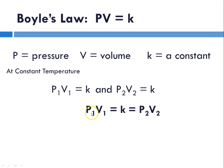We can rewrite that as P1V1 equals P2V2, where the ones would be the initial conditions and the twos would be the new or the final conditions.